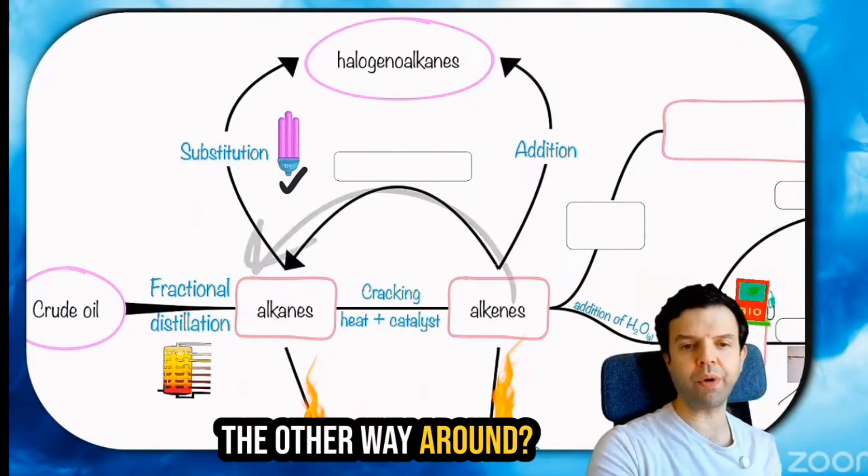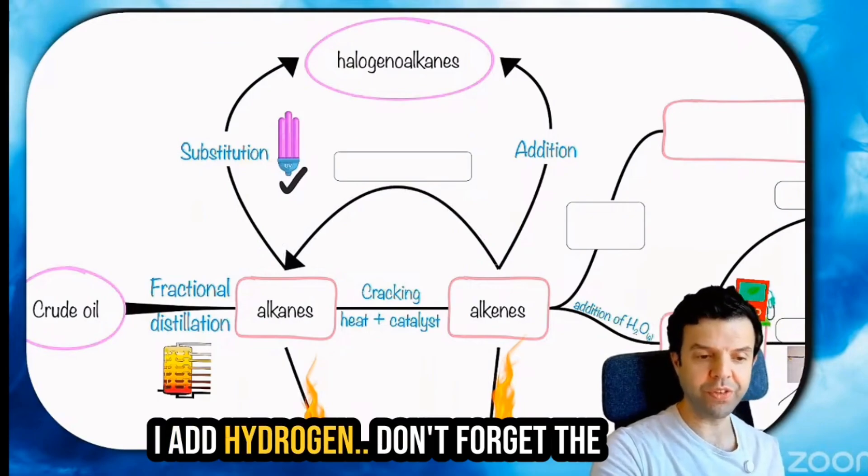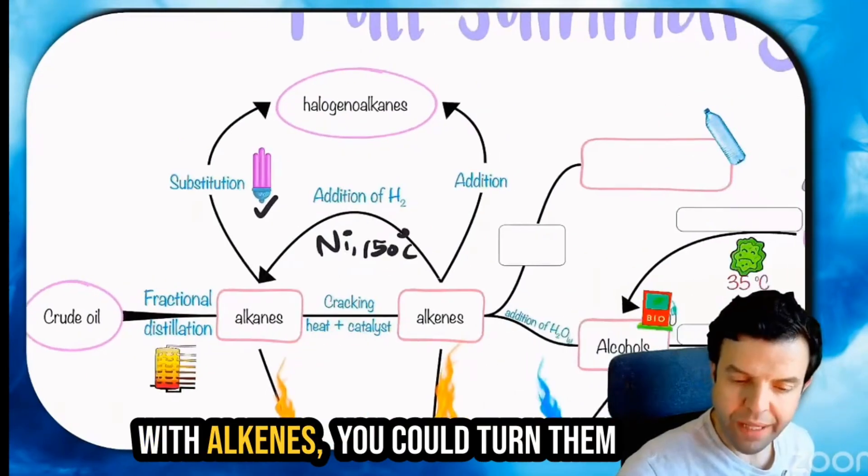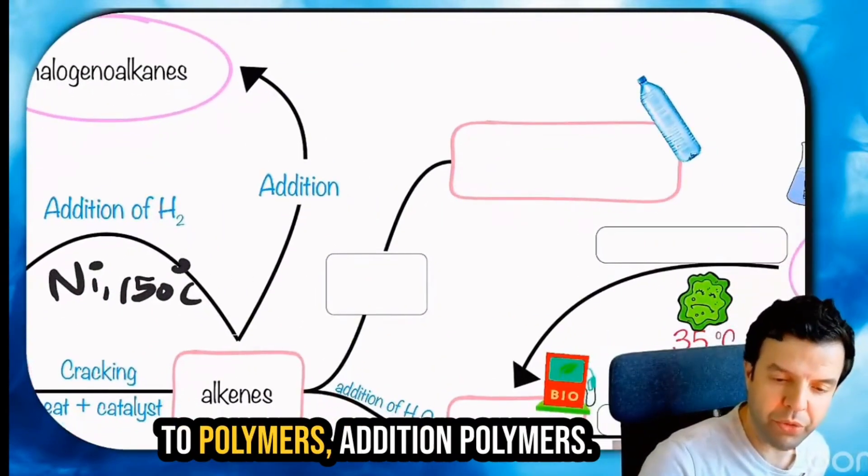But what if I want to go the other way around? I add hydrogen. Don't forget the catalyst and the temperature. With alkenes, you could turn them to polymers, addition polymers.